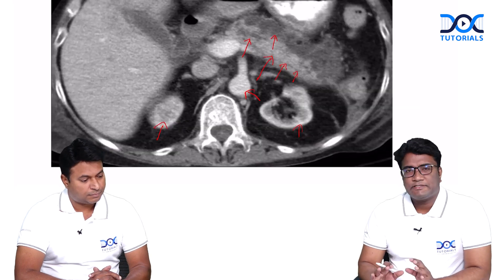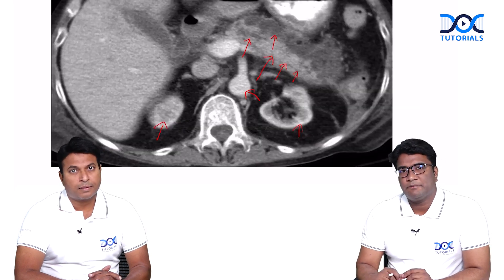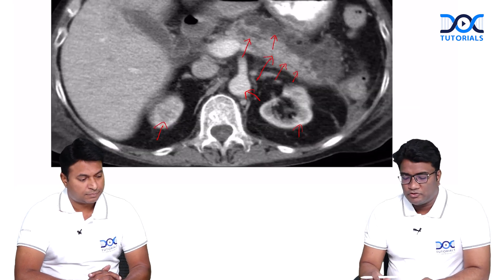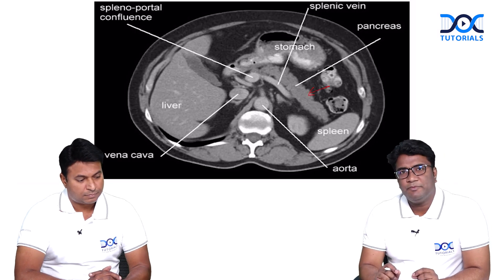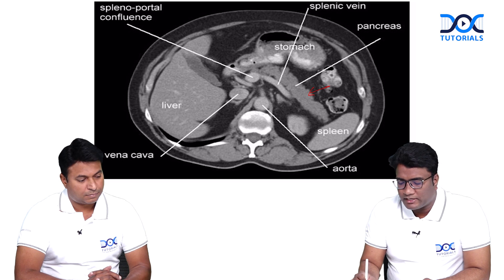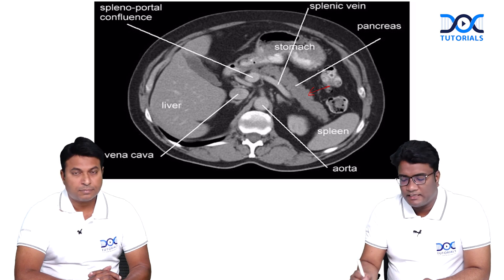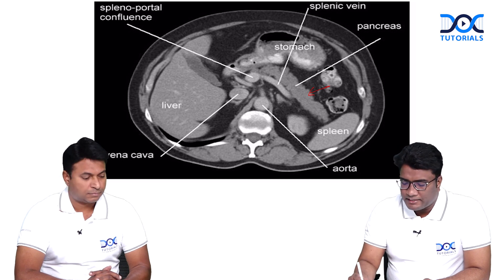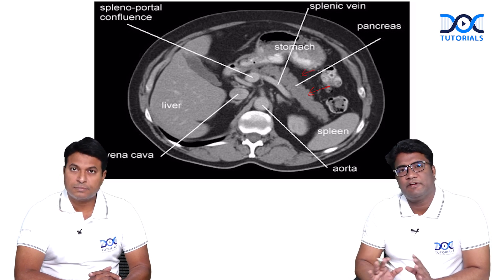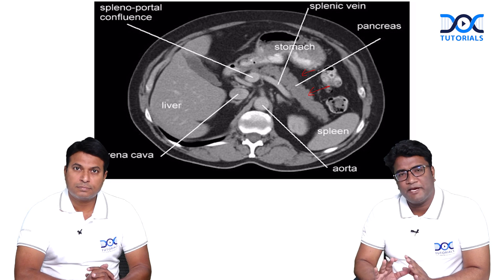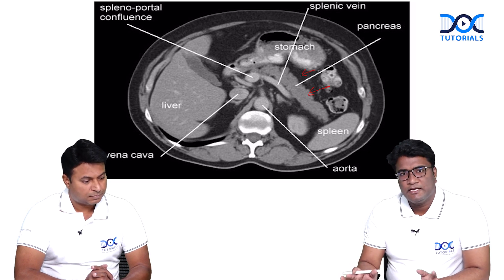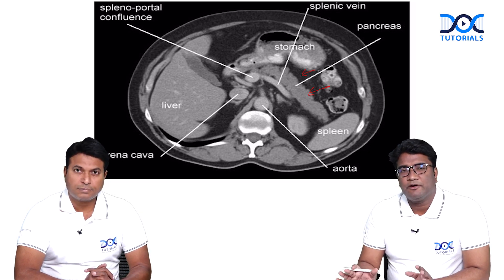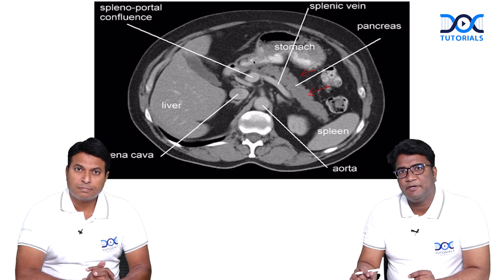Let us understand how a normal pancreas appears. A normal pancreas would be very homogeneously enhancing with small lobulations that you can see. The peripancreatic fat will not show any kind of inflammation — no peripancreatic fat stranding, no collections noted. This is how a normal pancreas would appear on a CECT image.